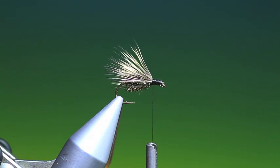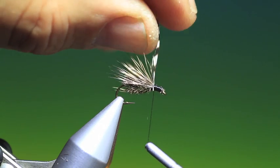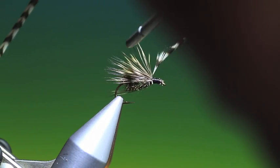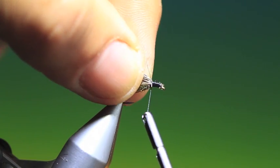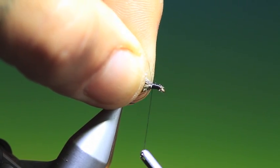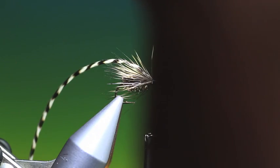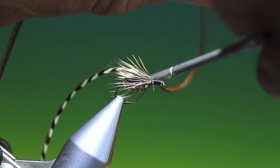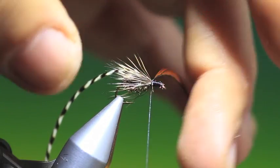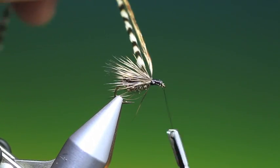Then we need a grizzle hackle. Tied in there. And then a brown hackle. And tie these in towards the front.